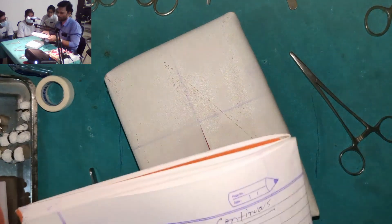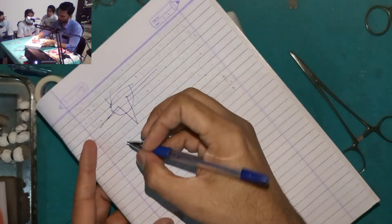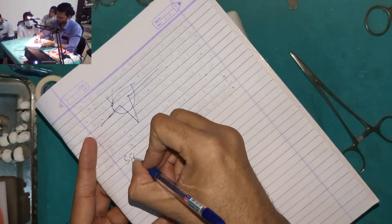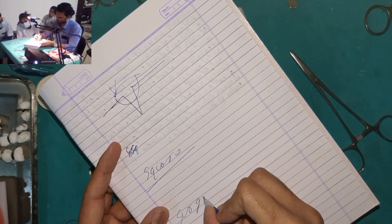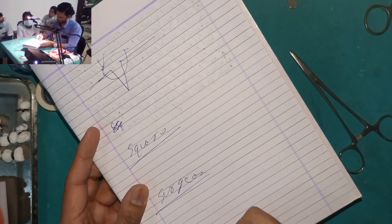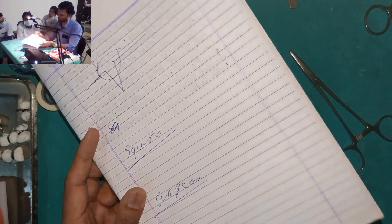So now we will tie the knot. So there are three knots. One is square knot, surgeon's knot, and granny's knot.